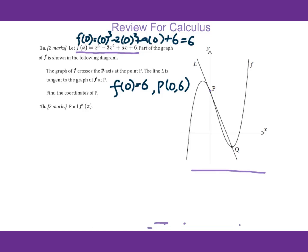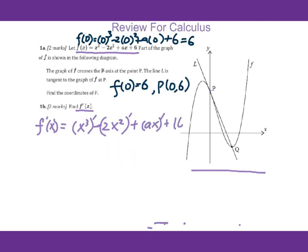For 1b, find the derivative of f of x. So we get f prime of x: x cubed, we do the derivative, minus 2x squared, do the derivative, plus 8x, we do the derivative, then plus 6, we do the derivative. You will get 3x squared minus 4x plus 8. This constant will be 0. Therefore, f prime of x equals 3x squared minus 4x plus 8.